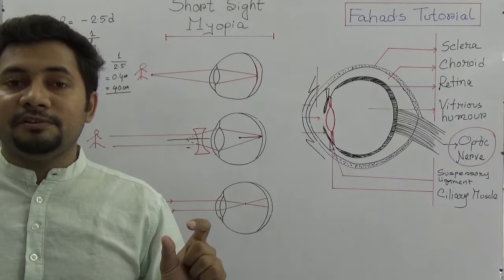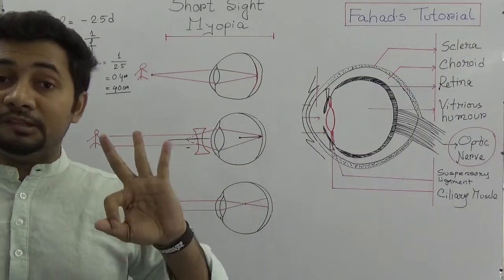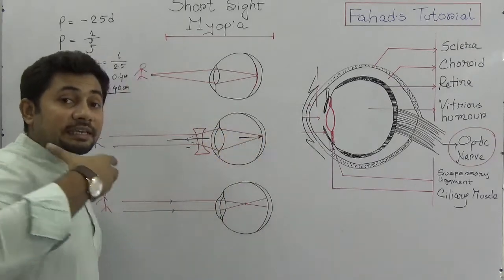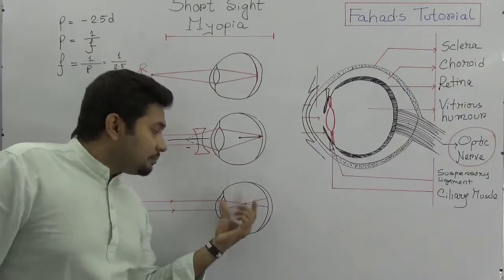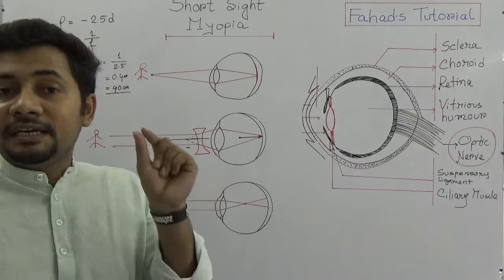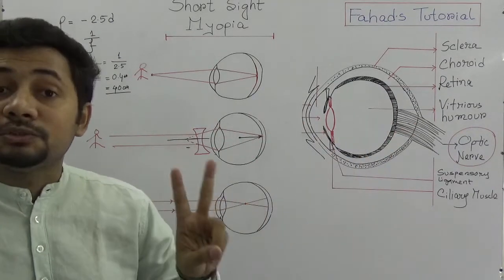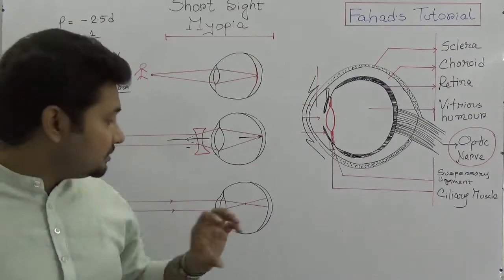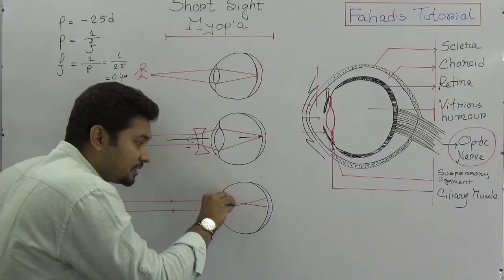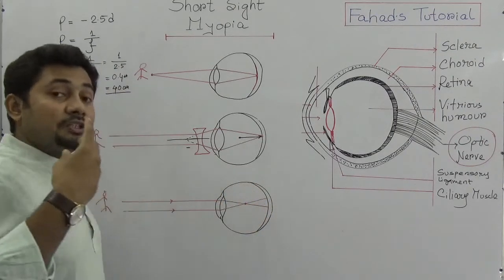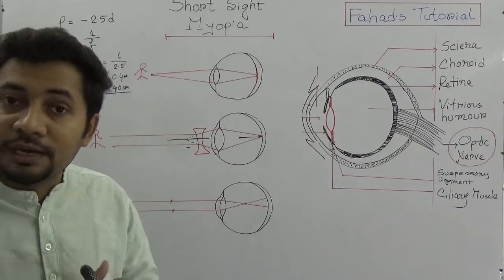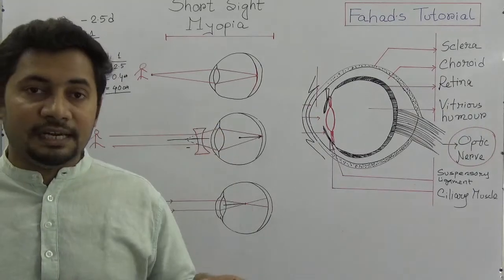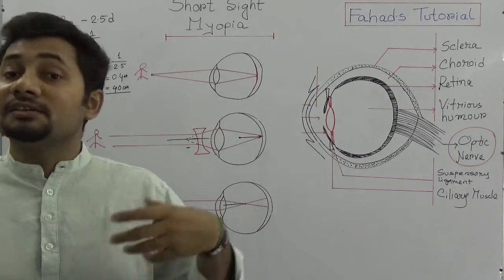The causes of myopia are three: number one, if the diameter of the eyeball is enlarged, the meeting point will be in front of the retina; number two, if the converging power of the eye lens gets stronger, rays will converge before reaching the retina; and number three, if converging power is high, the focal distance becomes shorter. All three lead to myopia.